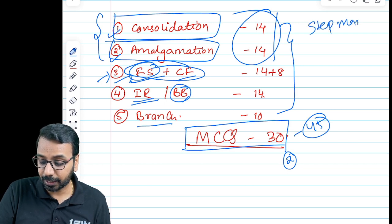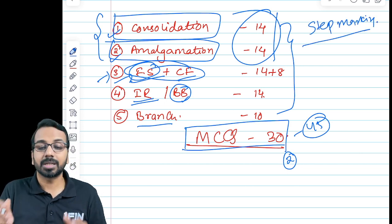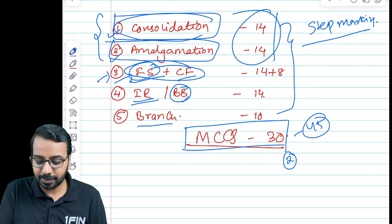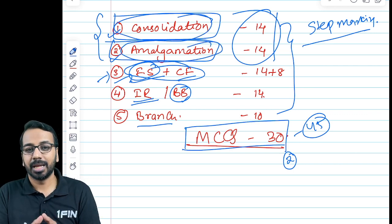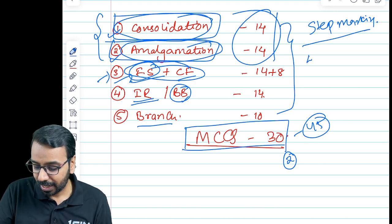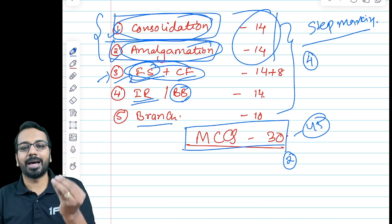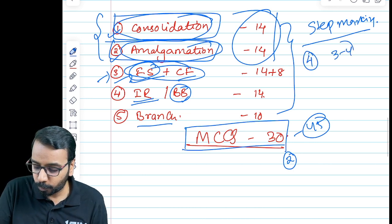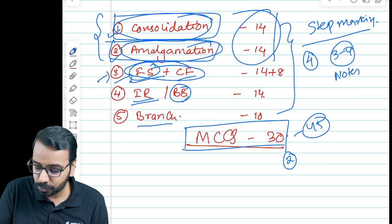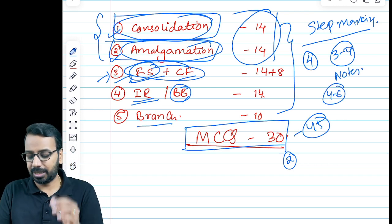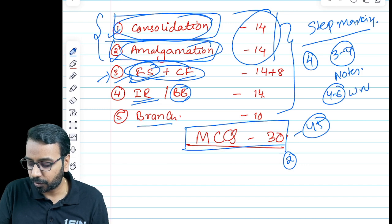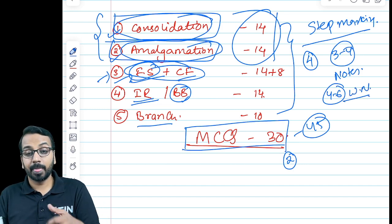The reason being the advantage of step marking. Because ultimately when you prepare a consolidated balance sheet or when you prepare an after amalgamation balance sheet, you are adding two numbers and the breakdown of the marks is around four marks is allotted for your balance sheet, around three to four marks is allotted for your notes to accounts, and the balance four to six marks, depending on the level of questions, is allocated for your working notes.